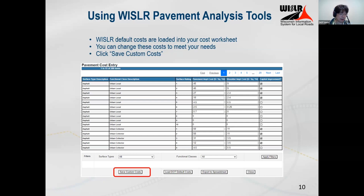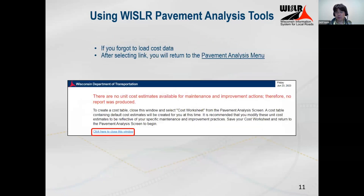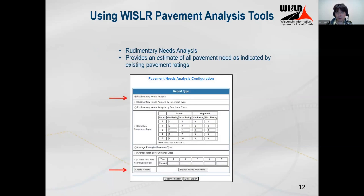If you don't load costs for the first time, you will receive an error message saying you need to load costs to your system. Once we have loaded our costs, we can start running our reports. The first report we're going to go over is rudimentary needs — these are reports that show you what your ratings are today and what it would cost to treat all of those roads today, given the ratings.